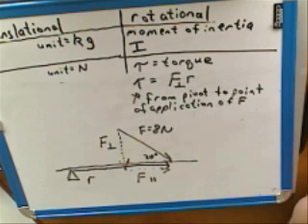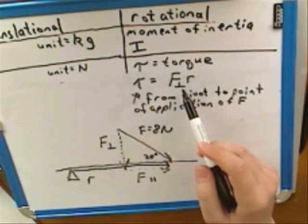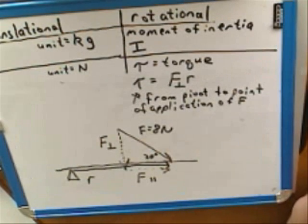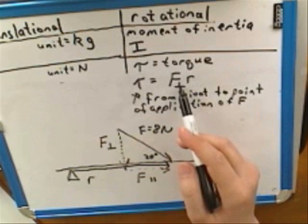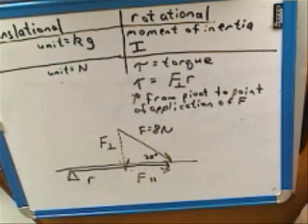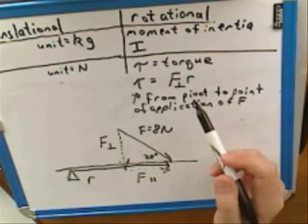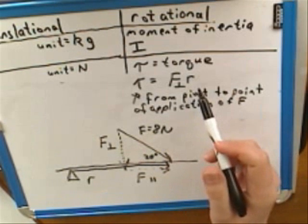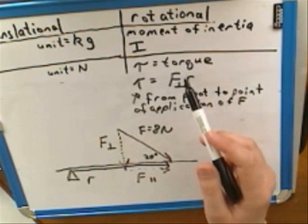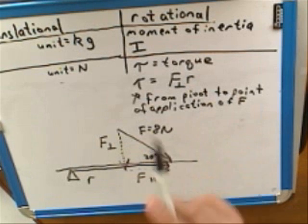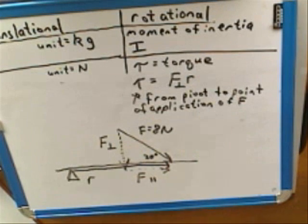So now we should use the symbol F perpendicular. What does F perpendicular stand for? It's the component of the force that's perpendicular to the R vector — that's what F sub-perpendicular means. Based on our common sense, we know that rotation is only affected by the component of the force that's perpendicular to the R vector.